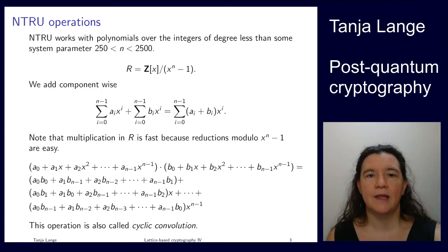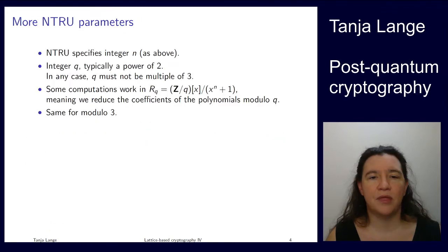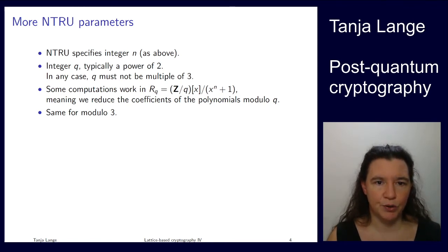Other parameters in NTRU. So there is some integer q, which is, in the original NTRU, typically a power of 2. And then there is a 3 running around, which could also be a parameter, but it's typically just chosen to be a 3. And so q's most important feature is that it's not 0 modulo 3. And so sometimes we work in the ring, which, if we need it, we have a letter for it r sub q, which means we're taking the coefficients of the polynomials and reducing them modulo q. And we also might encounter an r sub 3, which just means we're taking this polynomial over the integers and then reducing each coefficient modulo 3.